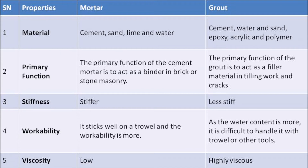Now let us talk about some differences between mortar and grout. The first property is material: mortar is made of cement, sand, lime, and water, whereas grout is made of cement, water, sand, epoxy, acrylic, and polymers. The primary function of mortar is to act as a binder in brick or stone masonry, whereas the primary function of grout is to act as a filler material in tiling work and cracks.